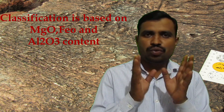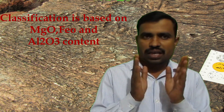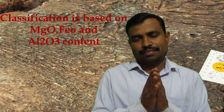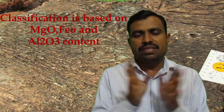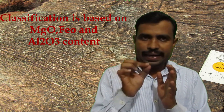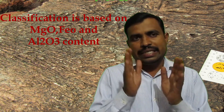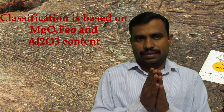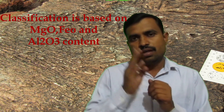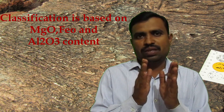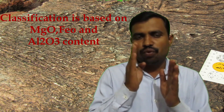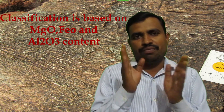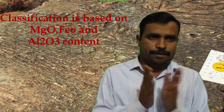Zenses classified komatiites into four varieties based upon their chemistry, that is the MgO, FeO, and Al2O3 contents. These are the major elements on the basis of which komatiites are classified into four types: first one is the peridotitic komatiite, second one is the komatiite, third one is the basaltic komatiite, and fourth one is the komatiitic basalt.